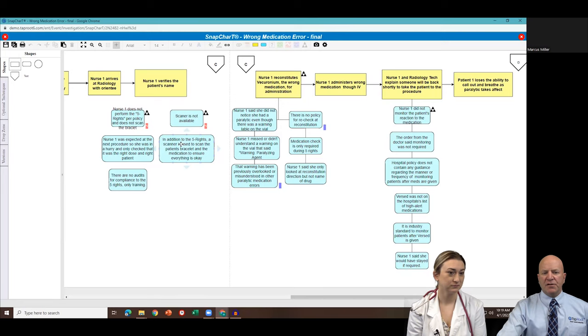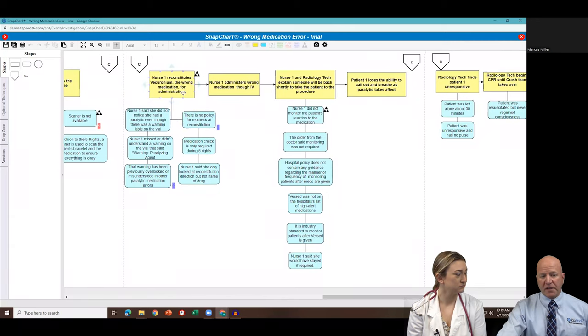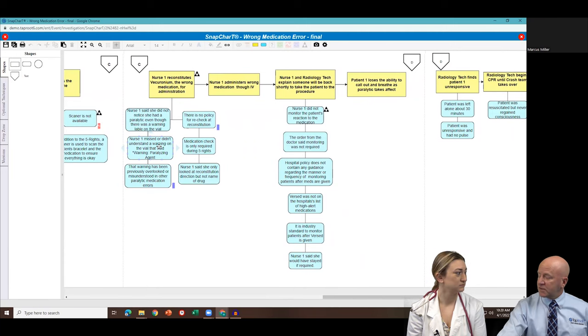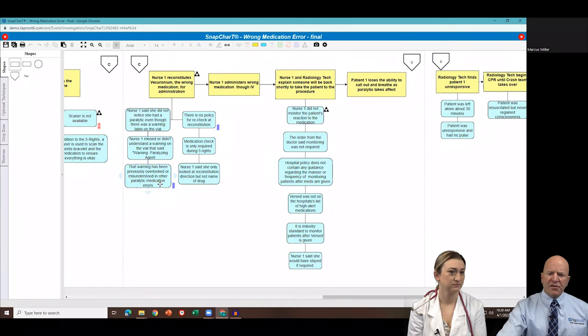And then when they come in, they're supposed to also verify that information. Cause you don't want to depend on people doing the right thing a hundred percent of the time in order for a patient not to get hurt. So yes, the nurses are supposed to do five rights, but then the backup is the fail safe is do the scan as well. And that way, if anything's messed up by a person, well, the technology is going to catch it. Well, that wasn't available. So another systemic issue. So then the nurse reconstitutes Vecuronium, the wrong medication. So she didn't notice she had a paralytic, even though there was a warning sign on there. She missed it. She didn't understand the warning sign or she was just, I think what I heard was she was surprised that she had to reconstitute it. So she just looked at the directions to reconstitute it. This warning, the labels on these medications, they've been overlooked or misunderstood in other paralytic medication errors. So it's not, again, it's just not her. There's other people making these mistakes. So maybe we have a labeling problem as well.